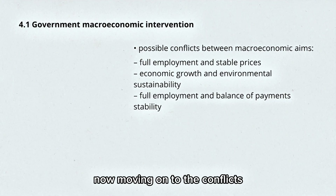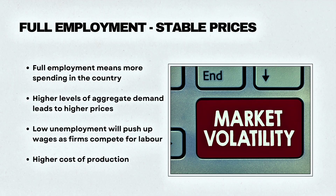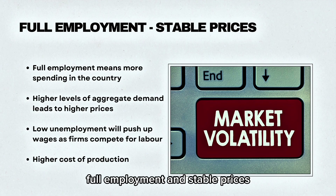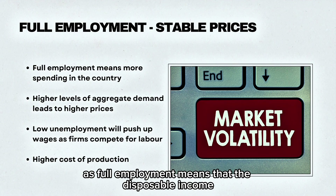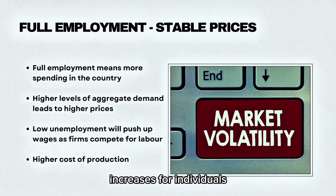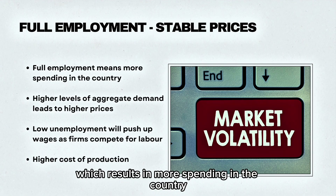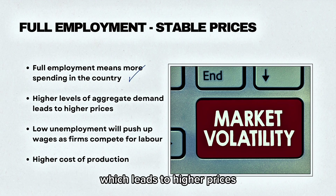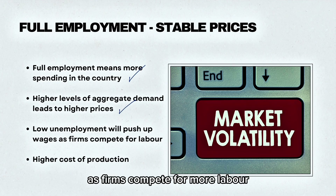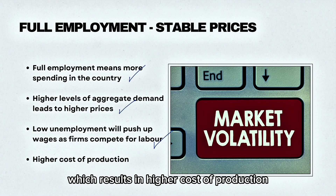Moving on to the conflicts between the macroeconomic aims. Firstly, there's a conflict between full employment and stable prices. Full employment means that disposable income increases for individuals, which results in more spending in the country, leading to higher levels of aggregate demand and therefore higher prices. Additionally, low unemployment will push up wages as firms compete for more labour, which results in a higher cost of production.